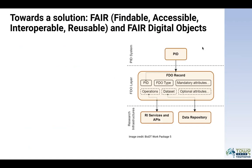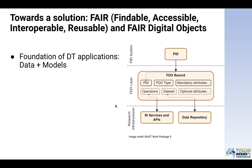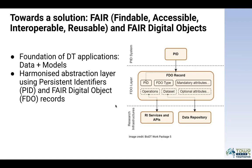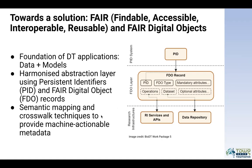In this implementation, these metadata records are connected to the persistent identifier system, providing a way to think about mandatory attributes across different domains and digital objects, extend those attributes for other use cases, and also provide types and operations that will be connected to different services. This is important to bring together different data and models and create a harmonized abstraction layer, and also provide opportunities to think about semantic mapping and crosswalk techniques to provide machine-actionable metadata.